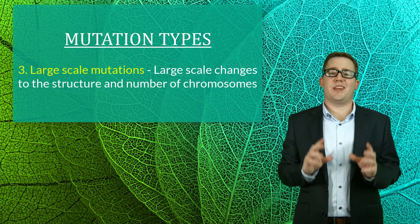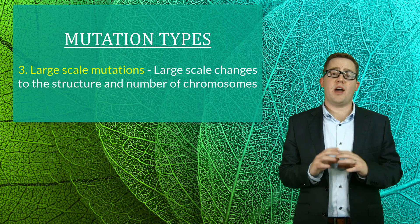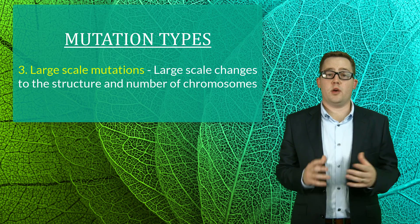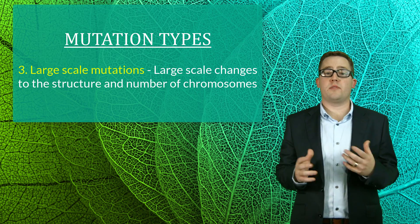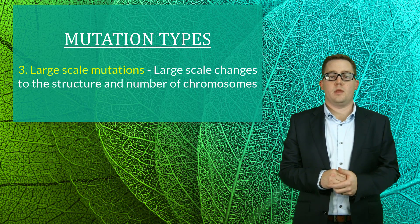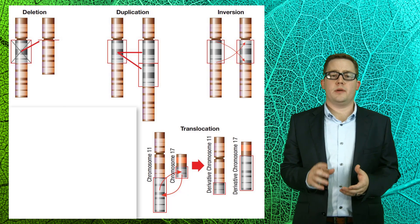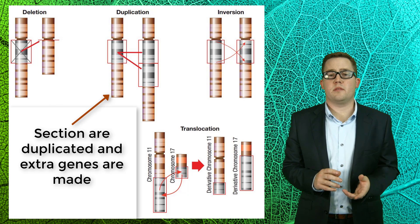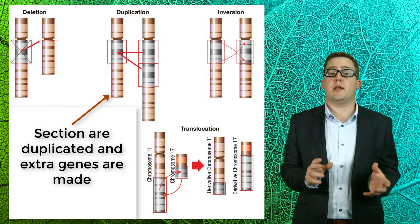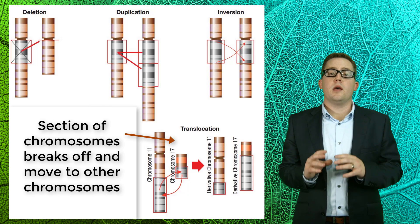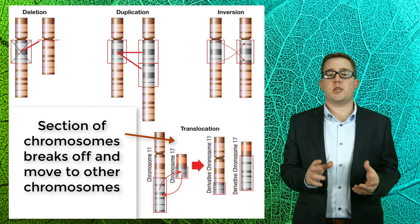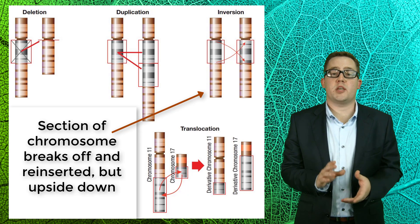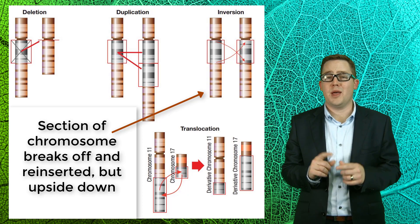The last of our mutation types are large scale mutations. These mutations usually involve large scale changes to the structure and number of chromosomes in a cell. These changes often occur during meiosis, as this is when chromosomes pair up and then separate into gametes. Some of these mutations include deletions, where genetic material breaks off from a chromosome and is lost; duplications, where genetic material is duplicated and extra copies of genes appear on chromosomes; translocations, where a section of one chromosome detaches and moves to a new chromosome; and inversions, where a section of broken chromosome is reinserted upside down.